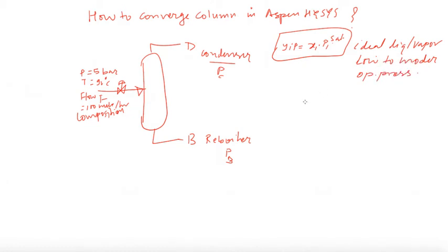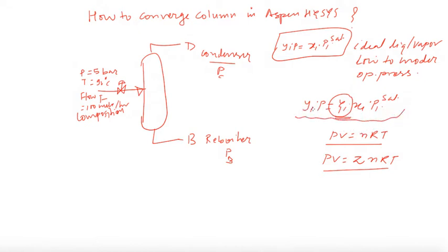For non-ideal liquid you can use this one: yi*P equal to gamma_i*xi*Pi_sat. This is actually activity coefficient, similar to Z in ideal gas equation where we use PV equal to nRT. For non-ideal equation we insert a component which is compressibility factor Z*nRT. Similarly we insert activity coefficient here to make this equation for non-ideal liquids. You can watch my Raoult's law applicability and limitation videos where you will find detail where it is applicable, where it is not applicable, and how to apply it.